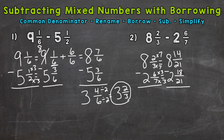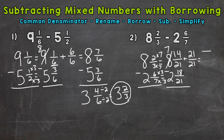So we have eight and 14 over 21 minus two and 18 over 21. We can't subtract 14 minus 18, so we need to borrow. Let's borrow from the eight, so that's now a seven. We add one whole in fractional form — 21 over 21 — because we need that common denominator to add the fractions. So 14 plus 21 gives us 35 over 21, minus two and 18 over 21.